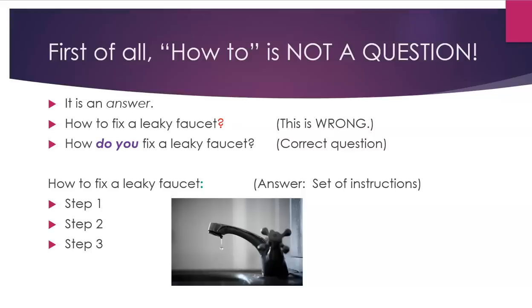First of all, 'how to' is not a question — it is an answer. For example, 'How to fix a leaky faucet?' with a question mark is wrong. 'How do you fix a leaky faucet?' is a correct question. 'How to fix a leaky faucet:' followed by steps — that is an answer or a set of instructions. You would expect to see step one, step two, step three.